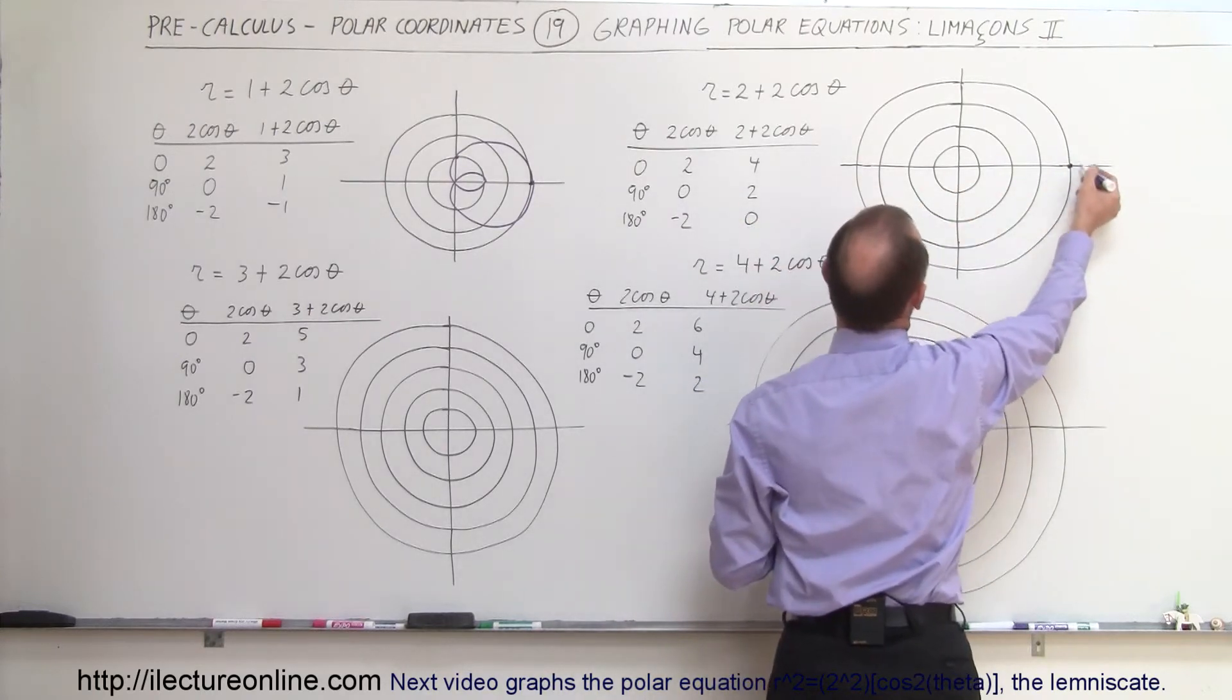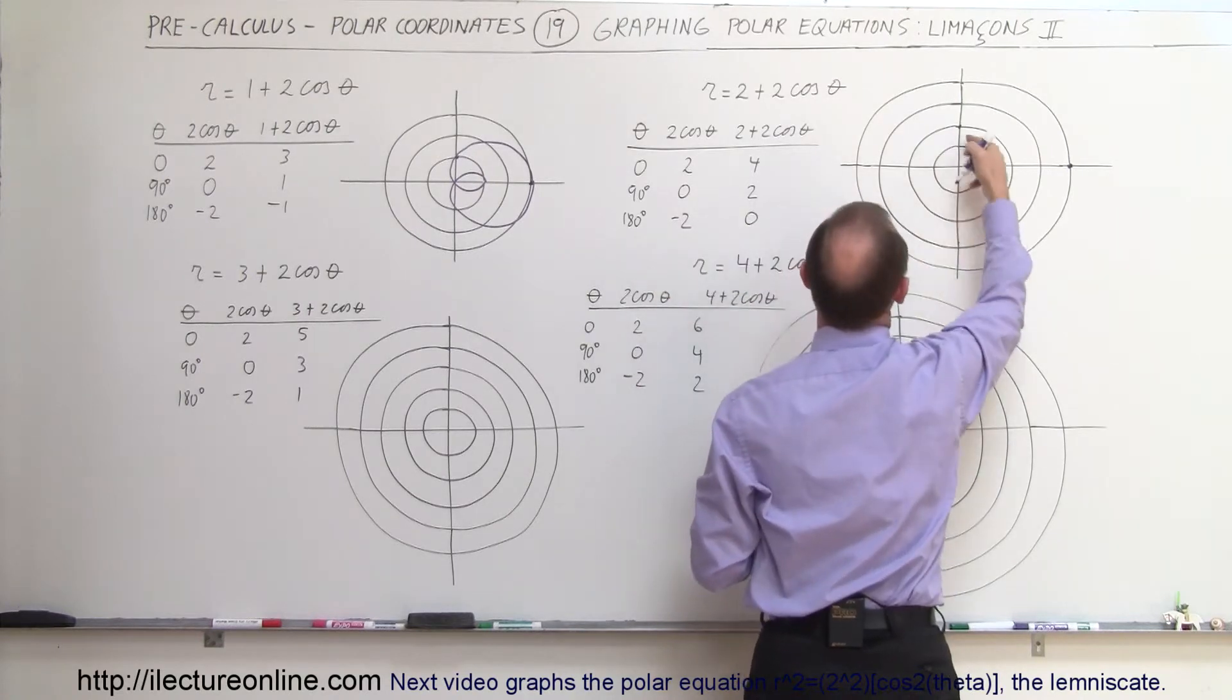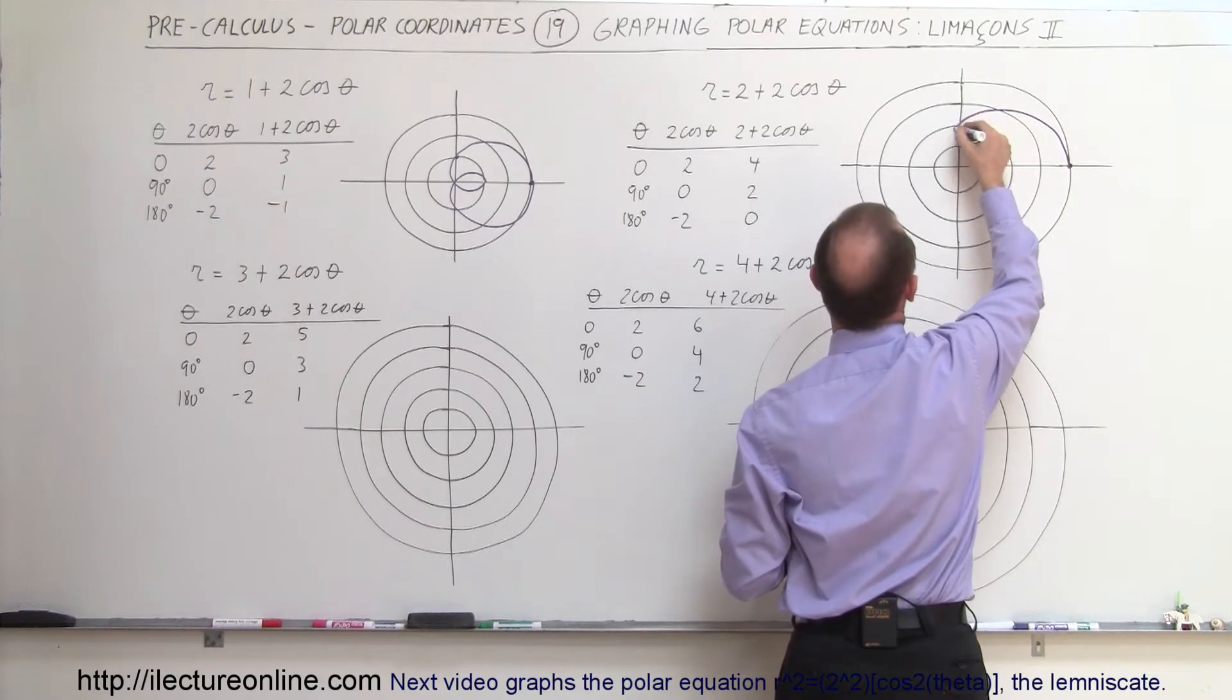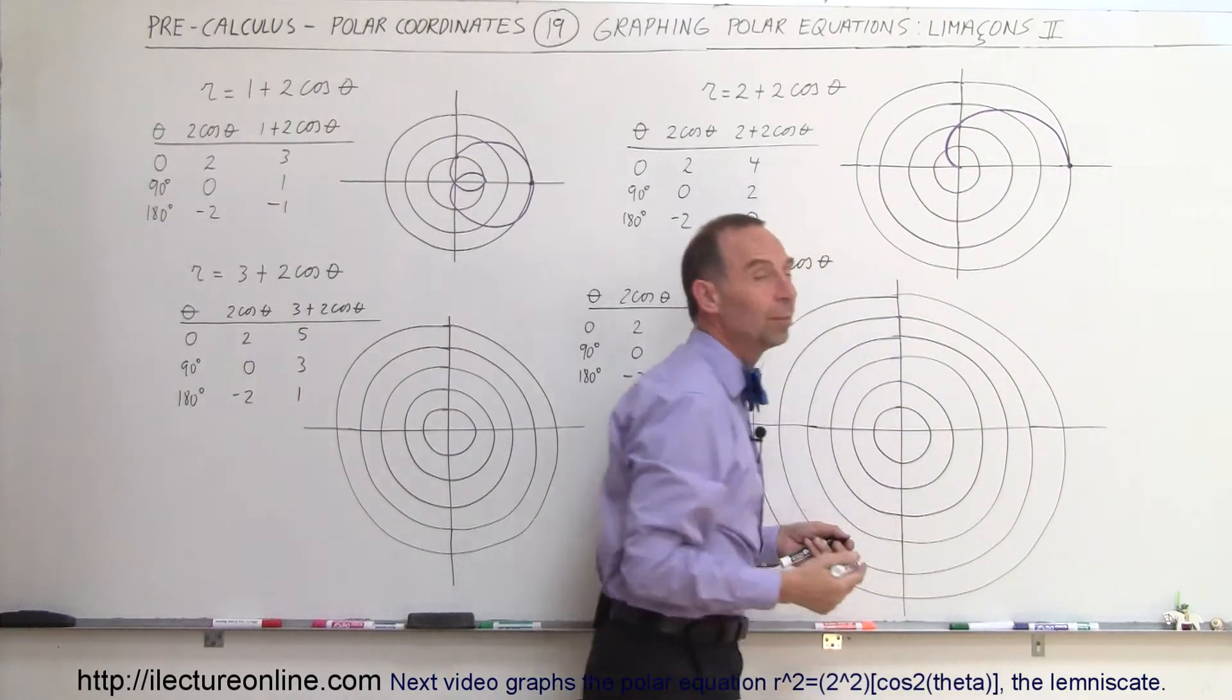At 90 degrees we're at 2, so when we come up here we're at 2, and at 180 degrees we come down to 0. So that means it comes like this, and it just comes back to 0, and it doesn't make that loop.